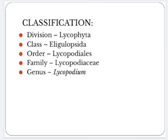The genus Lycopodium is commonly known as club moss or ground pine. It is a large genus comprising about 200 species growing mainly in subtropical and tropical forests. Some species are distributed in arctic and temperate regions. All species of Lycopodium grow in moist and shady places.